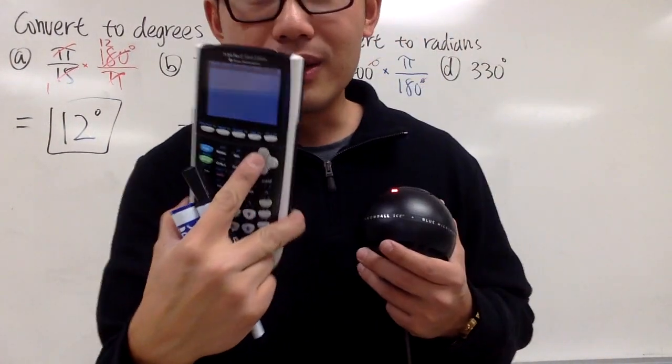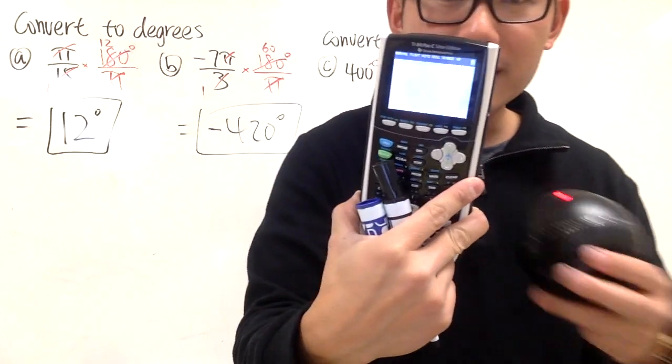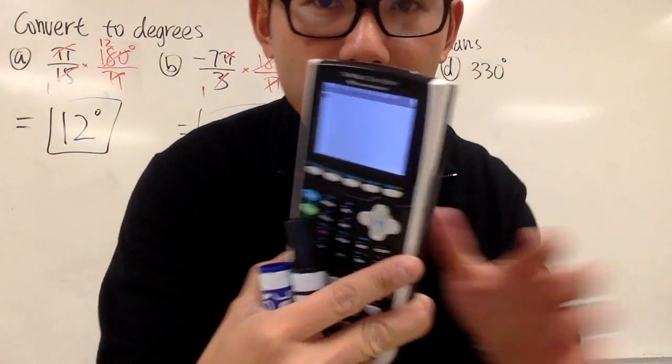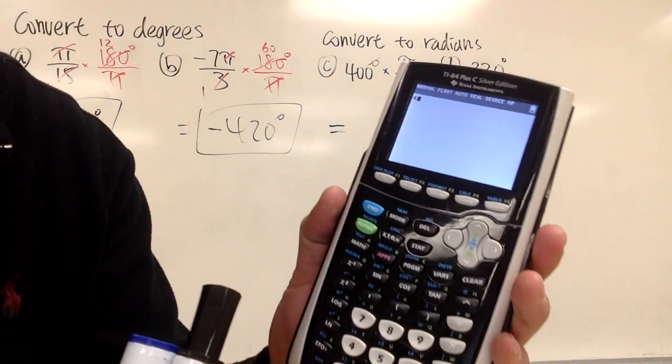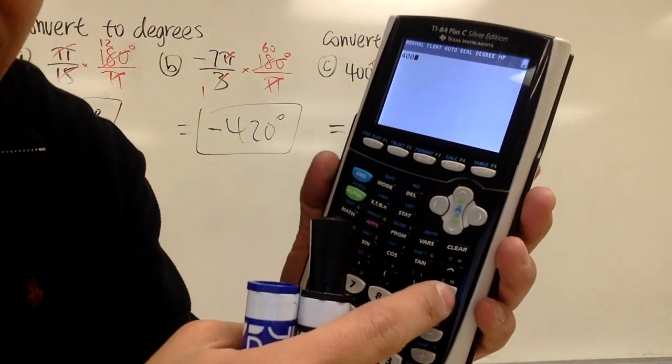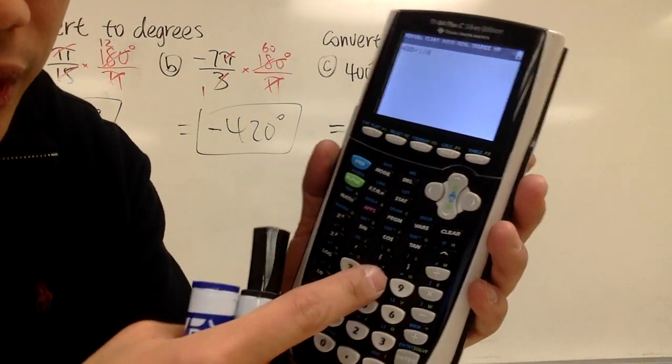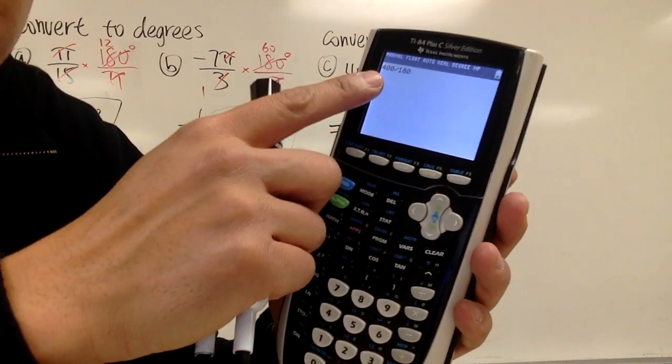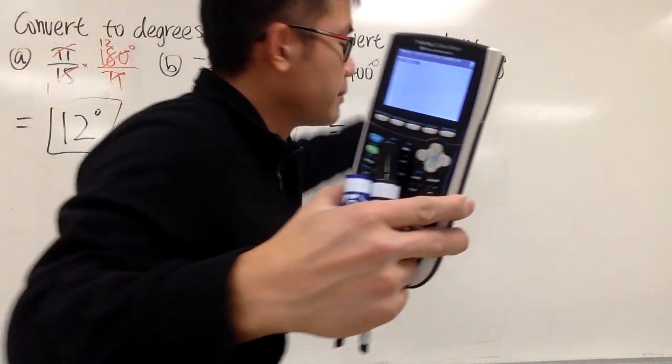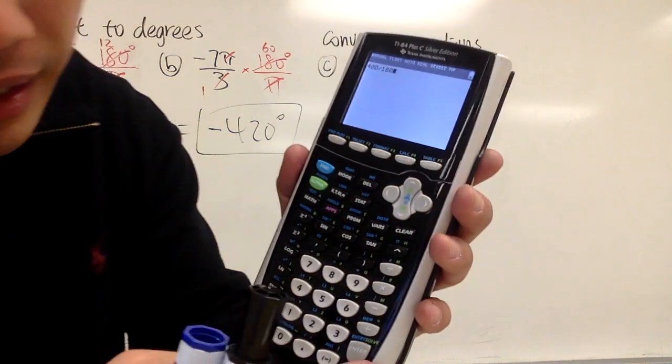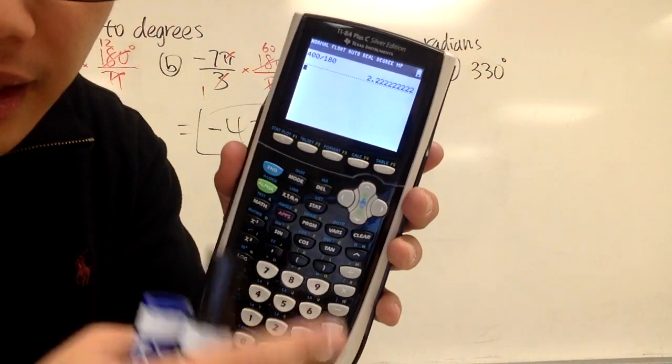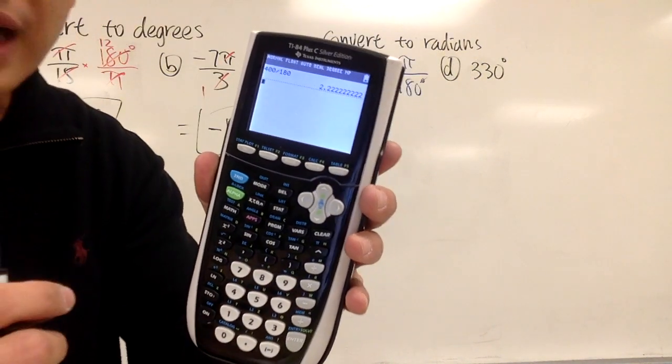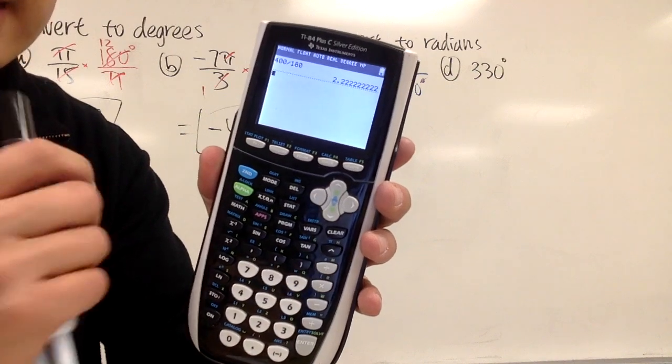If you have a graphing calculator like this, all you have to do is the following. So I will just have to put down 400 divided by 180, because the 400 was on the numerator and 180 is on the denominator. Press enter. And you get decimal. But most of the time, we prefer to have fractions. And this is how you do it.